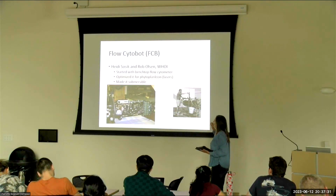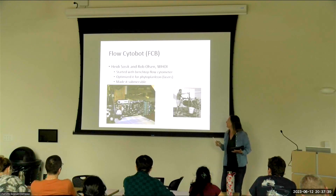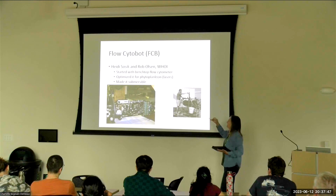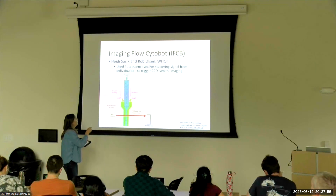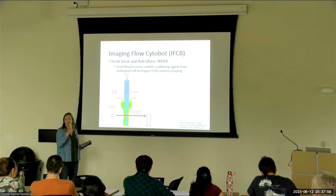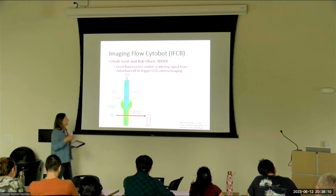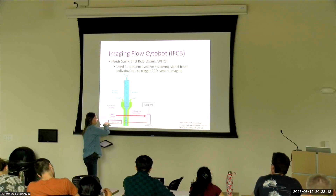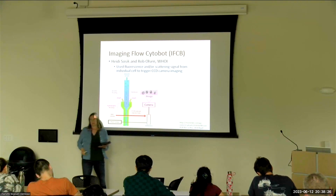They took that flow cytometer and designed it so you could put it in a can and deploy it in the ocean. That was one of the very early in-situ flow cytometers, or FlowCytoBots. The next step in its development was to use the signal they're measuring — either fluorescence or scattering — to trigger a camera. So every cell that goes through can be detected and it triggers a camera to capture a picture. There's a strobe light a little bit downstream that shines on that particular cell and reflects an image to the camera.